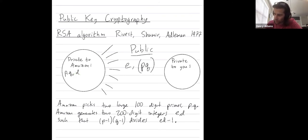So I want to send Amazon my credit card number X. And I'm going to assume that X is less than PQ. My credit card number is 16 digits long. P times Q is the product of two 100 digit numbers, right?